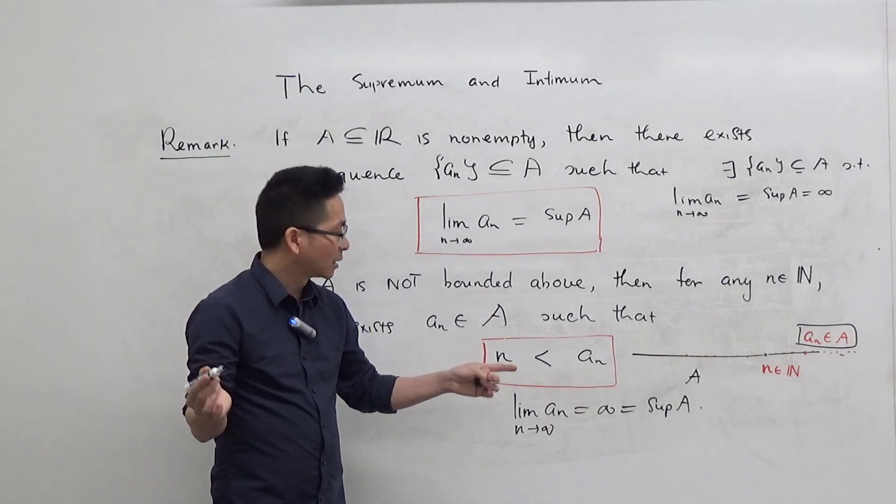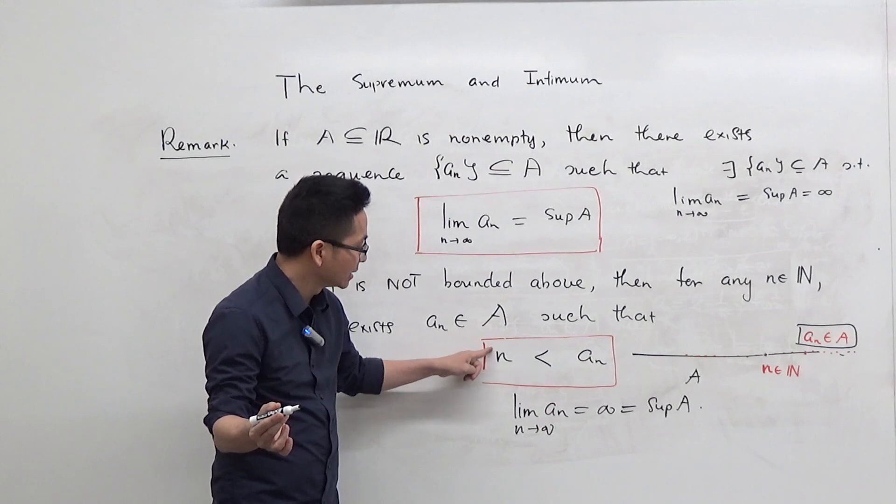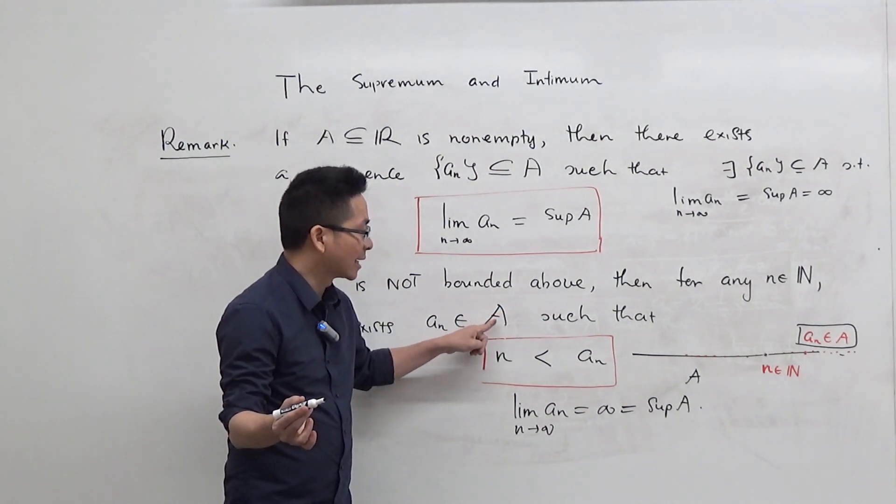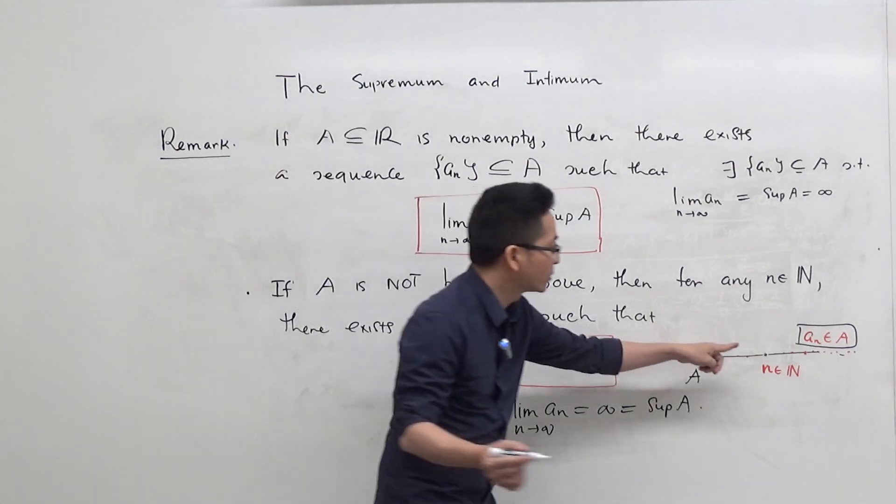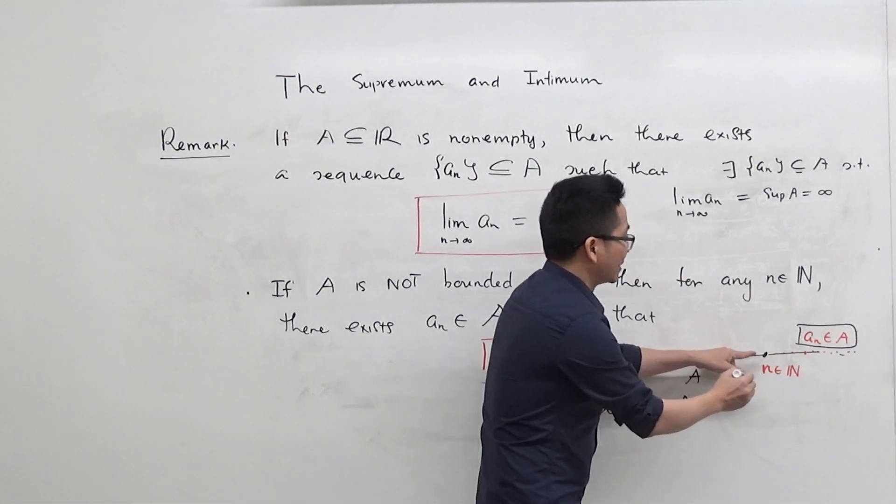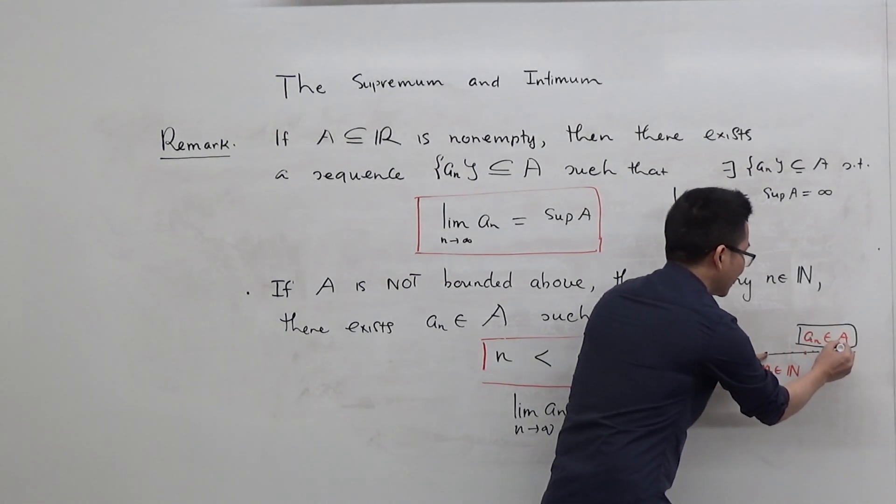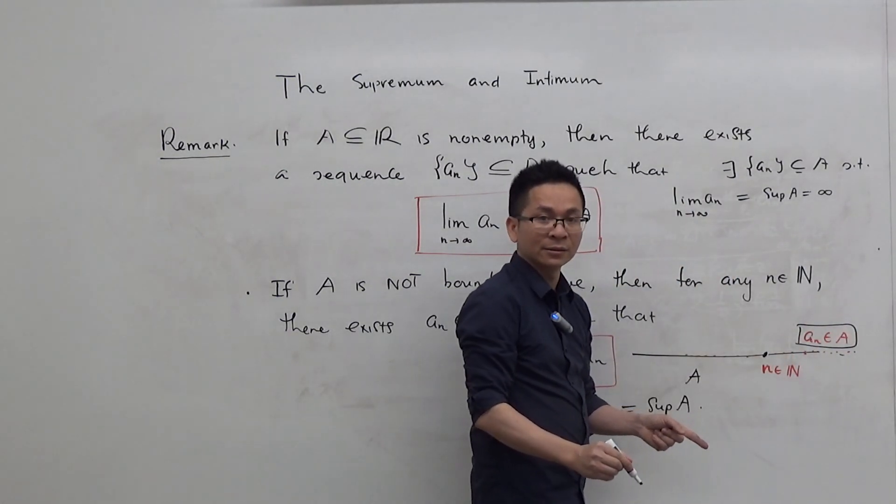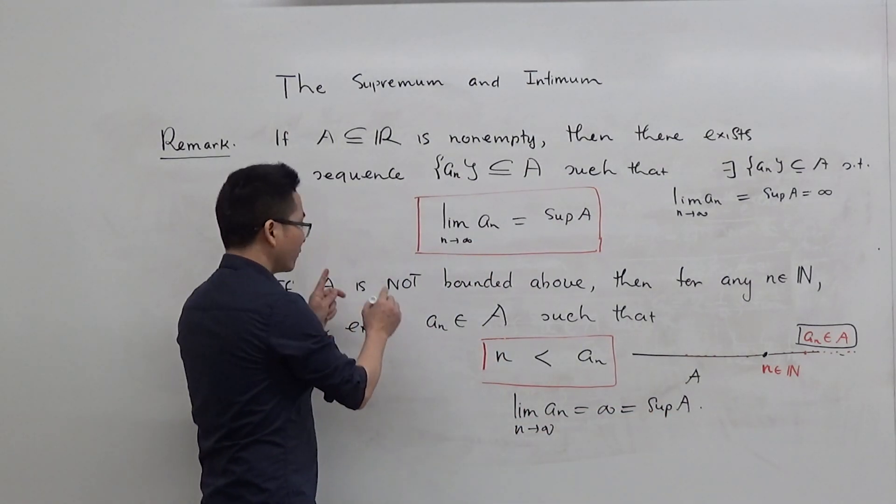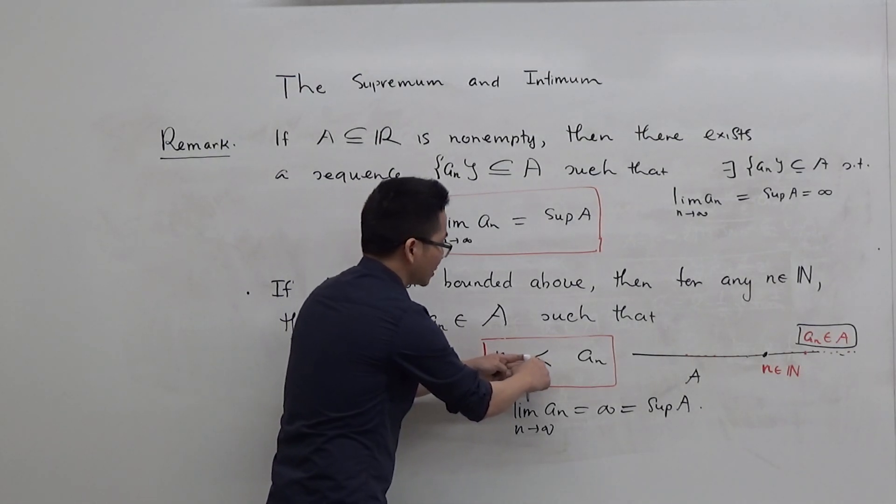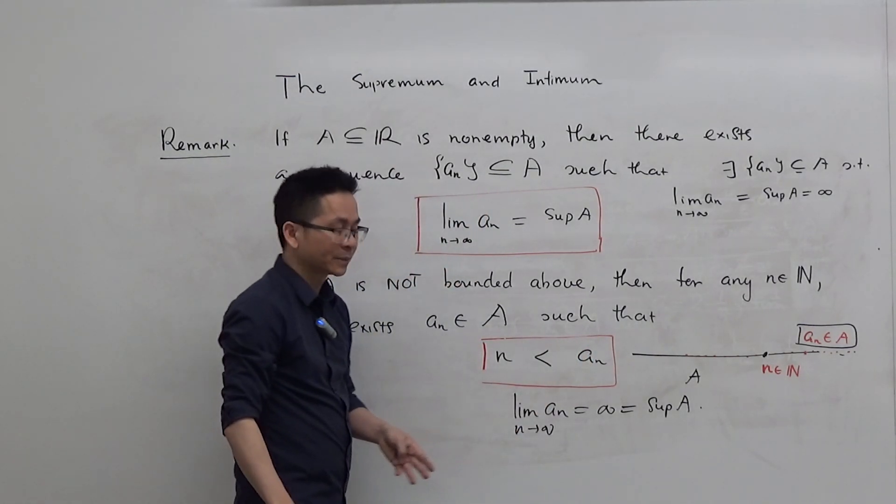So in particular, any natural number here cannot be an upper bound of the set A. That means you can always find some element of A that is strictly greater than n. So again, for any n in N, you can find an A_n in A such that n is strictly less than A_n.